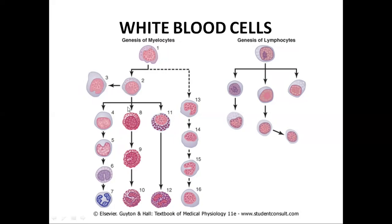The pro-myelocyte forms three types of cell lines: neutrophil myelocyte, eosinophil myelocyte, and basophil myelocyte. These myelocytes further differentiate into metamyelocytes — eosinophil metamyelocyte, neutrophil metamyelocyte, and basophil metamyelocyte — which ultimately form polymorphonuclear neutrophils, polymorphonuclear eosinophils, and polymorphonuclear basophils. These are also the stages for monocyte formation.